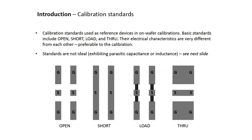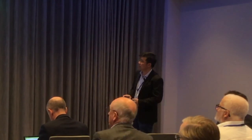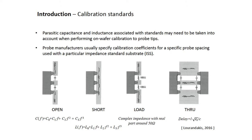On-wafer calibration standards are used as reference devices in on-wafer calibration. Basic standards include open, short, load, and through. Their electrical behavior is very different from each other, which is preferable for calibration. However, the standards are not ideal due to the existence of parasitic capacitance and inductance, particularly at very high frequencies. For example, for open, when you land a probe you have parasitic capacitance. For short, you have parasitic inductance. And for load, you hope it is a 50-ohm real impedance, but in reality it's a complex number.